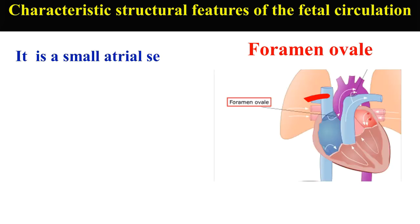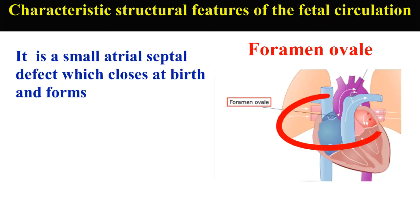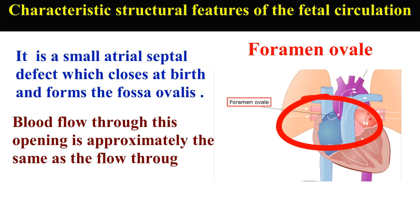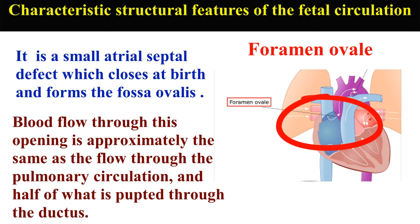Foramen ovale. It is a small atrial septal defect which closes at birth and forms the fossa ovalis. Blood flow through this opening is approximately the same as the flow through the pulmonary circulation, and half of what is pumped through the ductus.